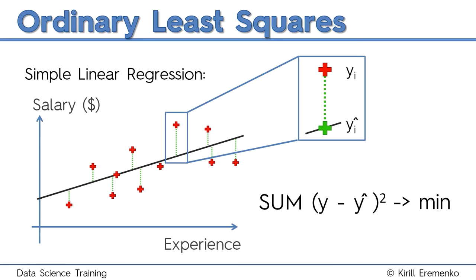Then it finds the minimum one. It looks for the minimum sum of squares. It finds a line which has the smallest sum of squares possible, and that line will be the best fitting line. That is called the ordinary least squares method. That's how the simple linear regression works, and I look forward to seeing you on the next tutorial.